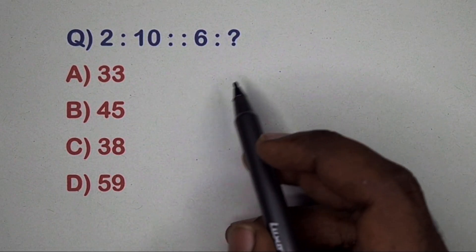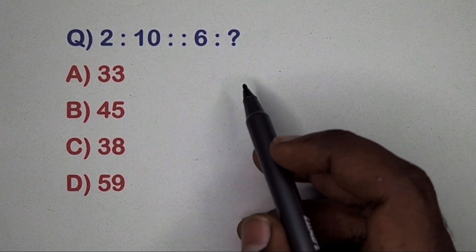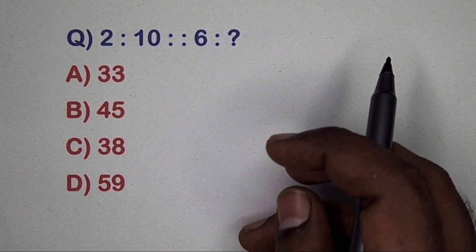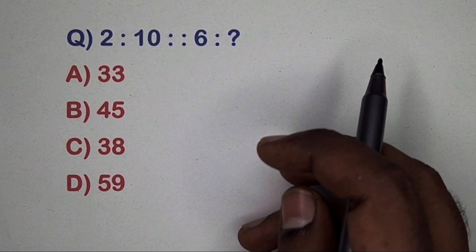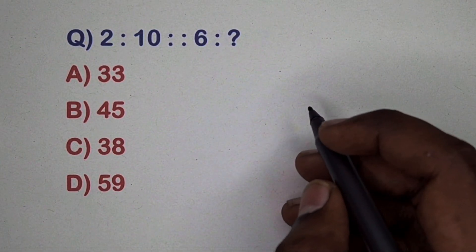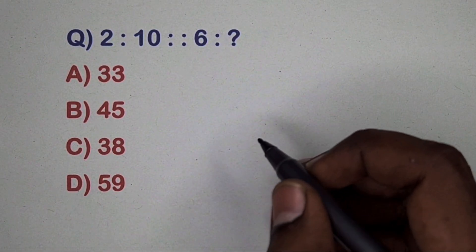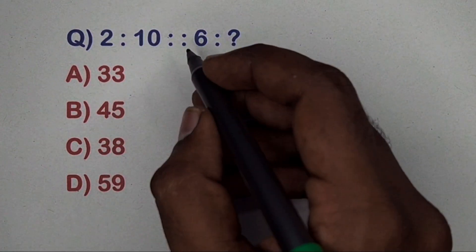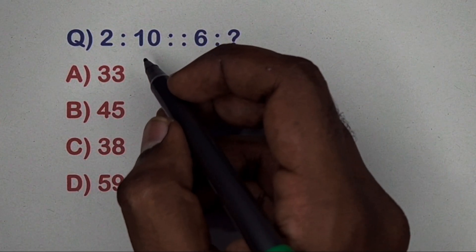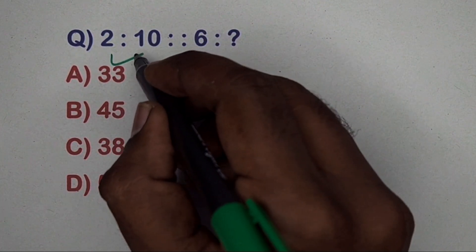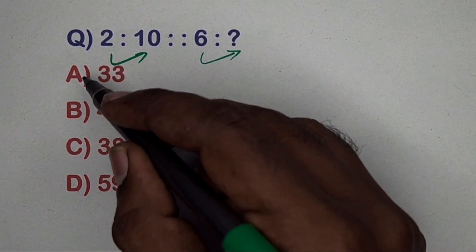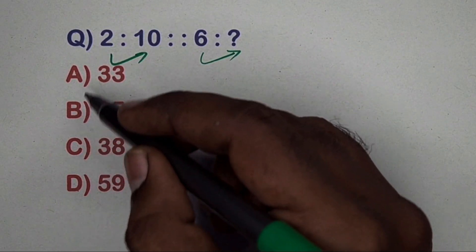Hi friends, this is an analogy video. In this video we will cover all methods, so please watch the full video and don't skip. Go to question 2 related to 10, 6 related to which number — options are given. Find the relation between this pair of numbers.